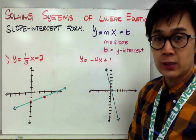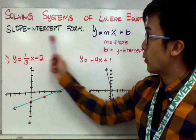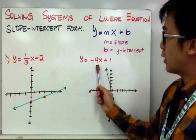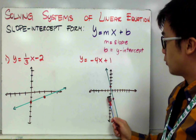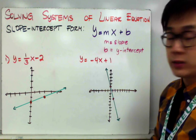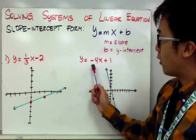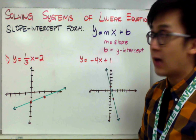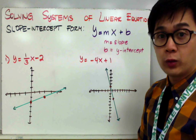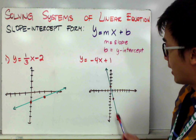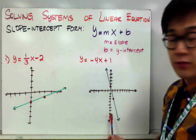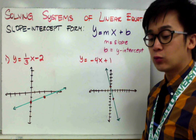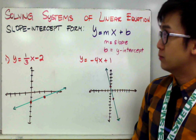For y equals negative 4x plus 1, we start at positive 1 and move 4 units down — since the slope is negative — then 1 unit to the right. Notice that every time we move along the x-axis, it is always to the right. That is a key technique to remember when graphing using slope-intercept form. Connecting the points gives us the line of y equals negative 4x plus 1.